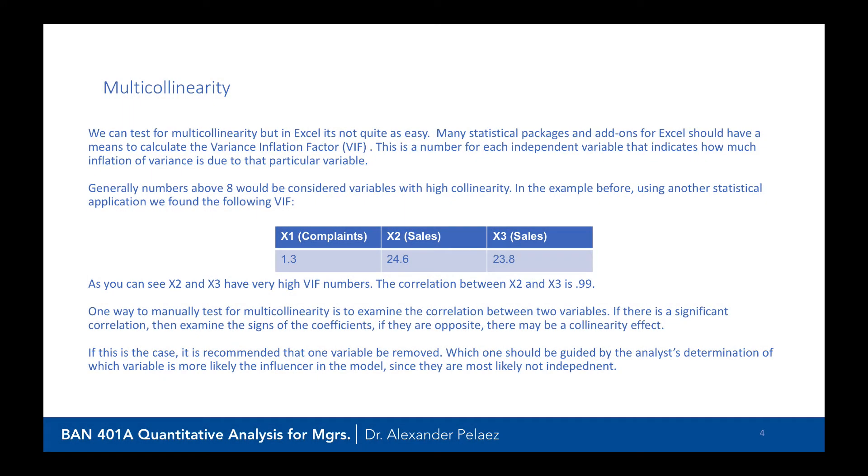We can test for multicollinearity, but in Excel it's not quite as easy. Many statistical packages and add-ons for Excel should have a means to calculate the Variance Inflation Factor, or VIF. This is a number for each independent variable that indicates how much inflation of variance is due to that particular variable. Generally, numbers above 8 for the VIF would be considered variables with high collinearity. We have a module that will actually show you how to calculate this in Excel.